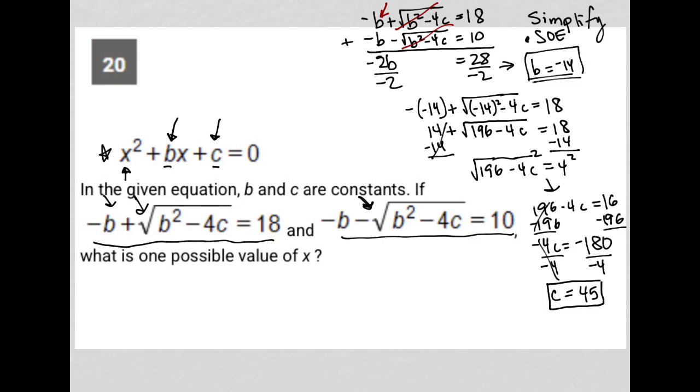Which means now I'm ready to actually solve for x. I have x² - 14x + 45 = 0, because I figured out what b is, -14, and I figured out what c is, 45.